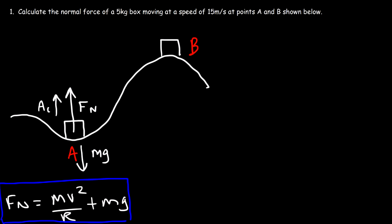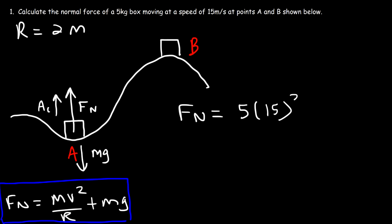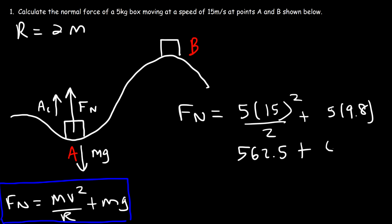The radius of curvature is 2 meters for both A and B. At position A, the normal force is mv²/r + mg: mass of 5, speed of 15, radius of 2, plus 5 times 9.8. That gives 15 squared times 5 divided by 2, which is 562.5, plus 49. So the normal force at position A is 611.5 newtons.